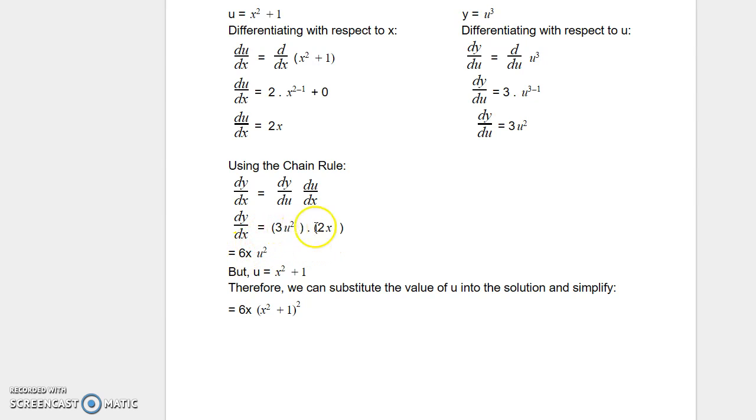When we simplify that, multiplying 3 times 2 is 6, times u², giving 6xu².